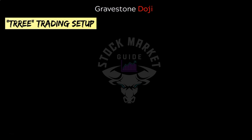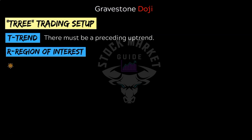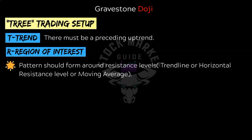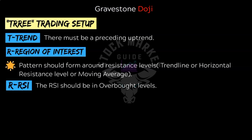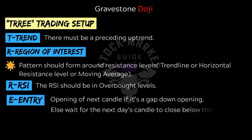Let's apply the TREE trading setup for gravestone doji. T is trend — the trend must be up. R is region of interest — since this is a bearish reversal pattern, it should form around resistance levels such as a trend line, horizontal resistance, or moving average. R is RSI — it should be in overbought territory. E is entry — enter at the opening of the next candle if there is a gap down opening, else wait for the next candle to close below the gravestone doji. Always take confirmations and never trade candlesticks in isolation.